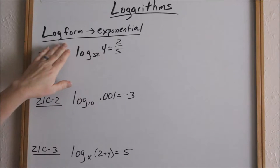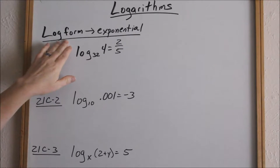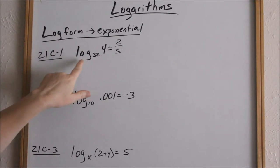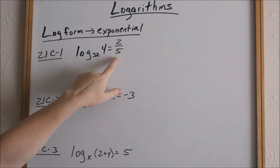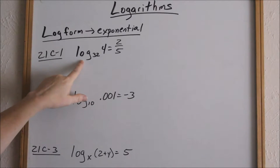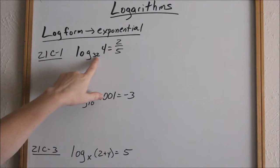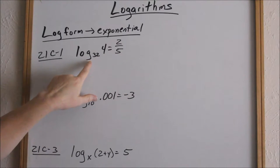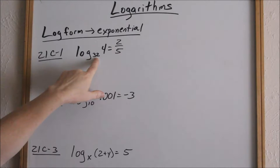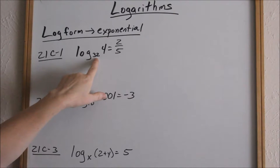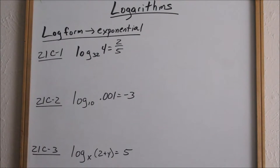These problems we're going to go from logarithm form — you'll just see me write 'log form' — to exponential form. This is in logarithm form. We're looking at 21c number 1. The way this is read is: log base 32 of 4 equals 2-fifths. This 32 is a small subscript down below.